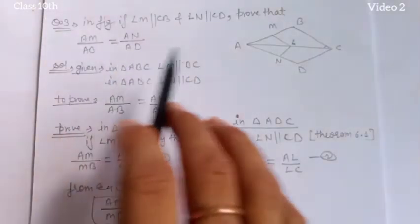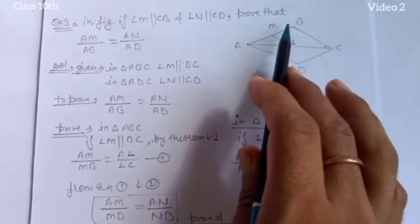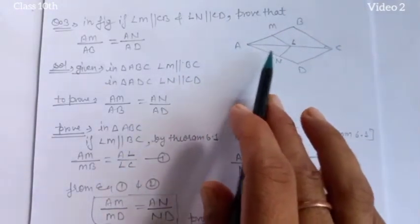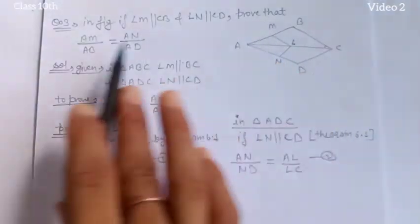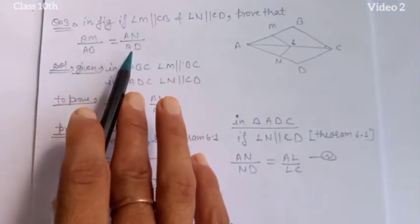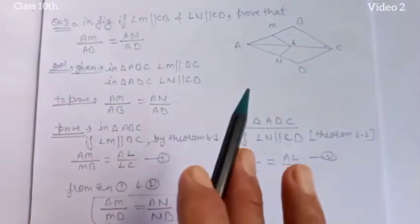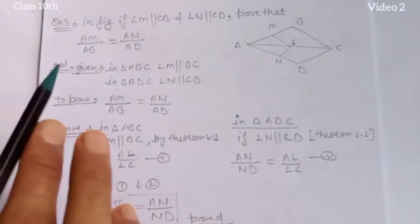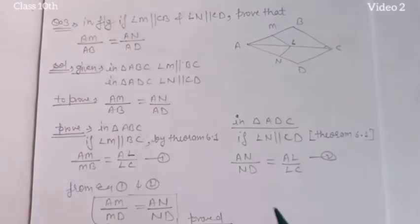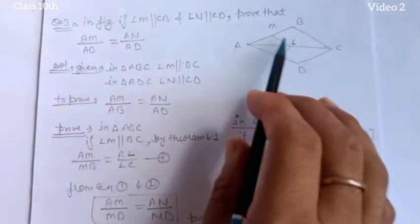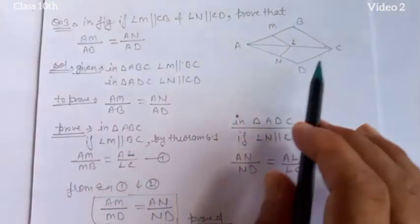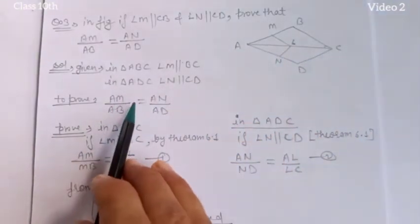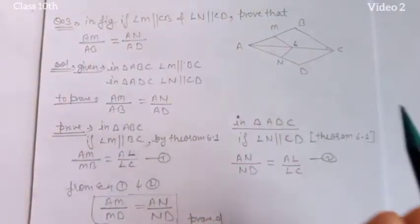Question number 3: In the figure, if LM is parallel to CB and LM is parallel to CD, prove that AM upon AB is equal to AN upon AD. For proof-type questions, we first write what is given, then what we have to prove, and then how to prove it. Given: in triangle ABC, LM is parallel to BC, and in triangle ADC, LN is parallel to CD. This is directly related to theorem 6.1.